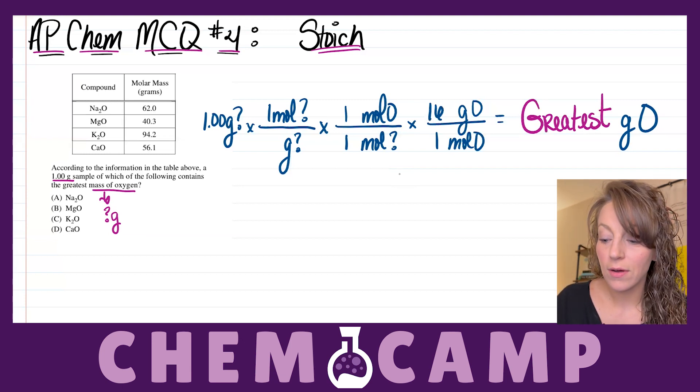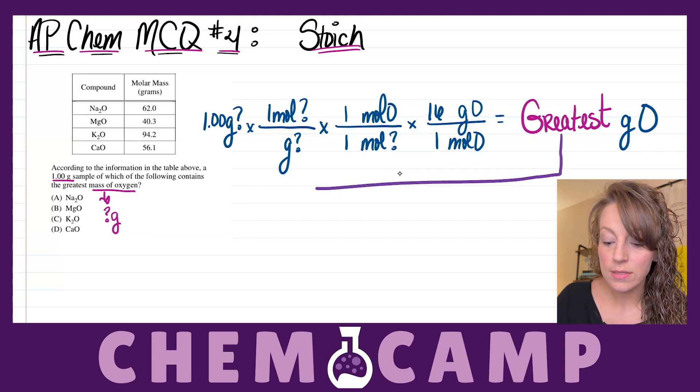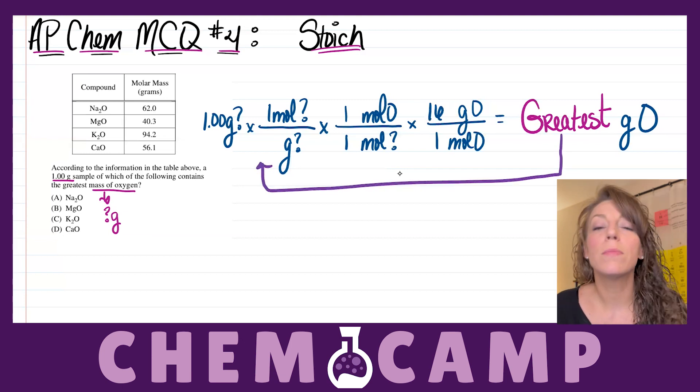Well if I know I want the greatest number there, what does that mean about the number that needs to be plugged in on the denominator of that first ratio?